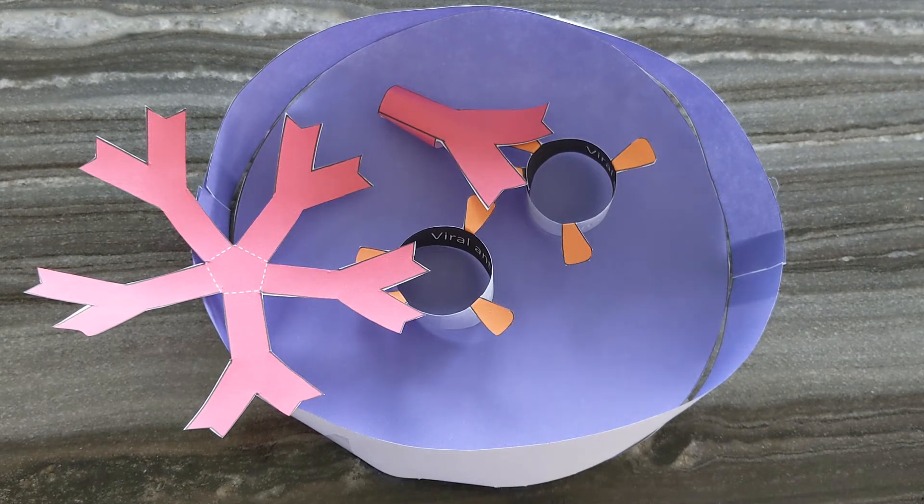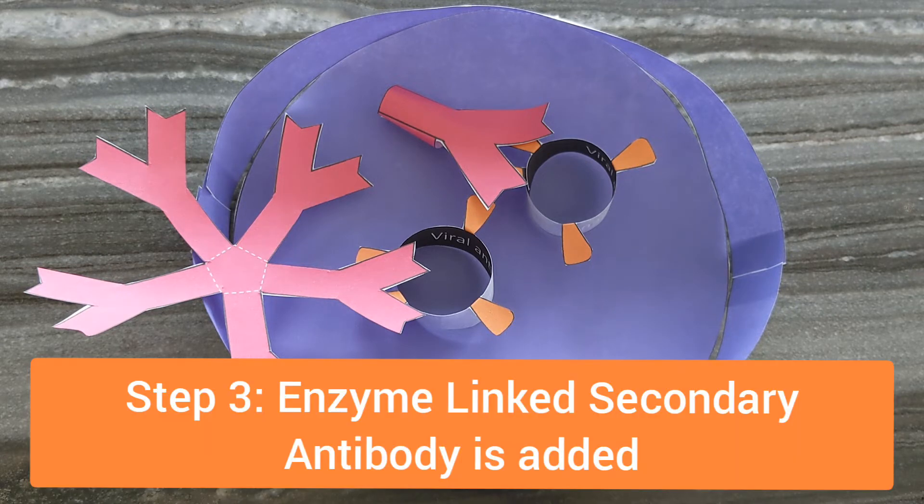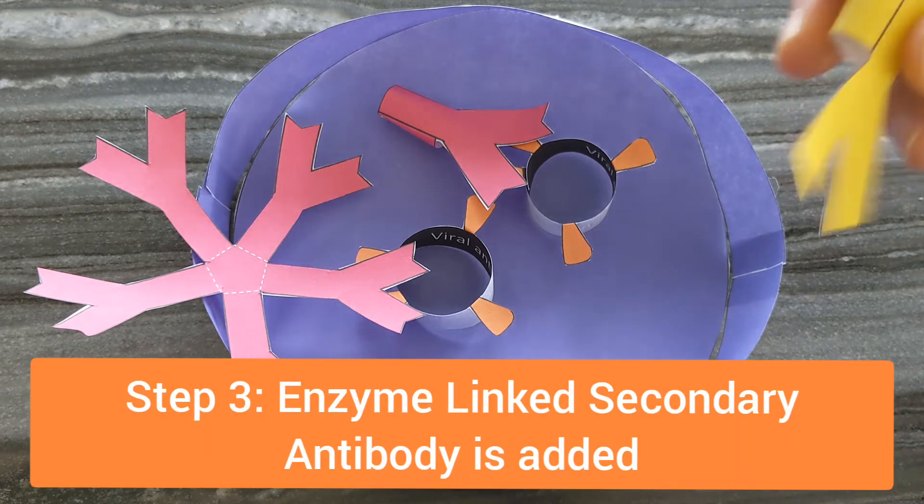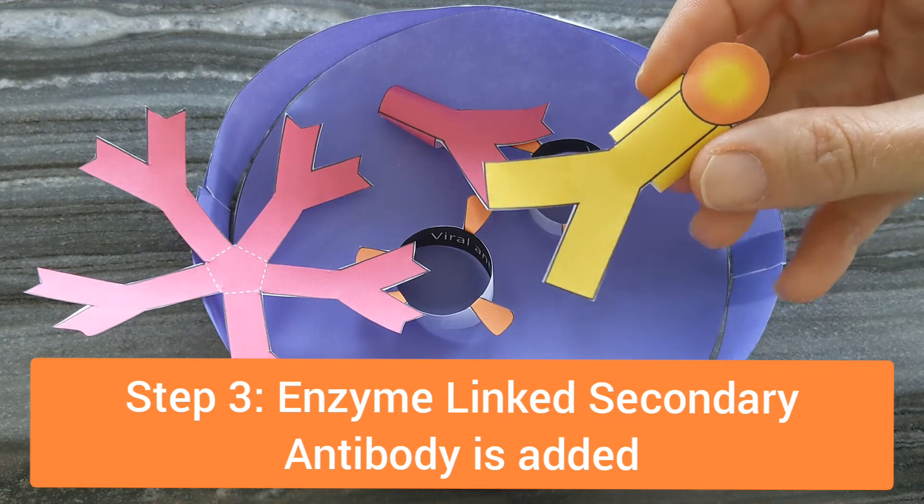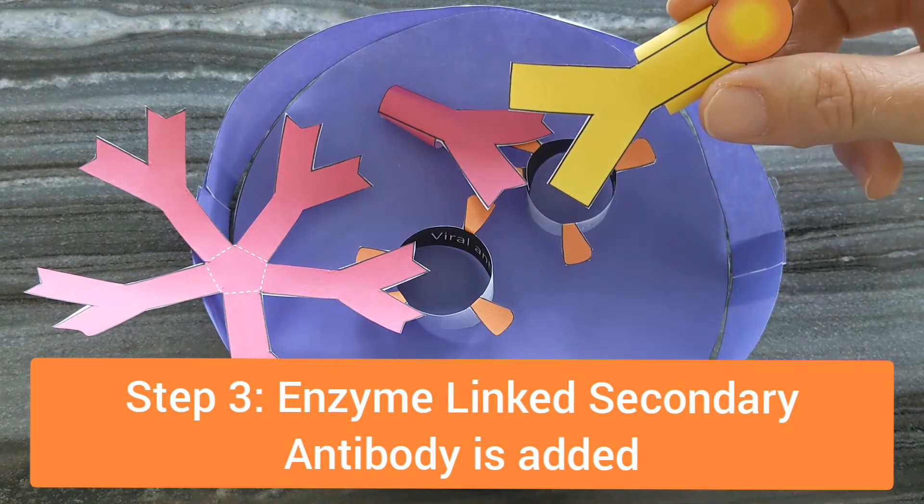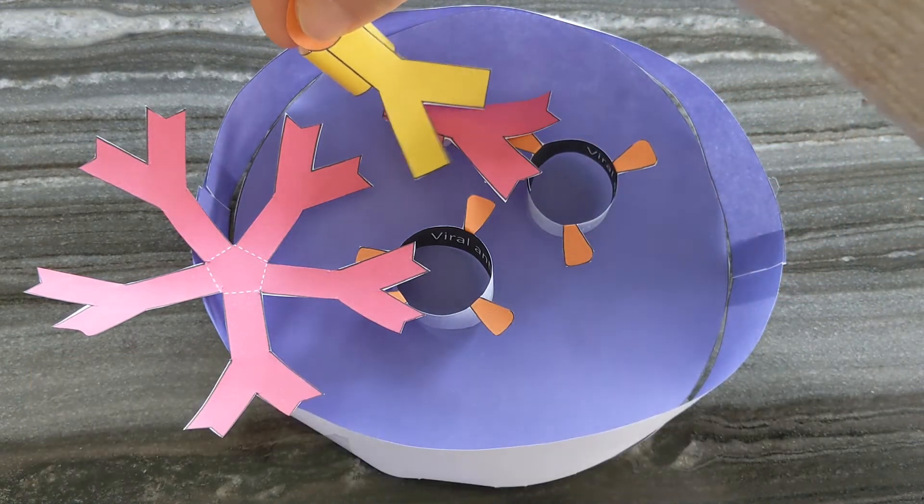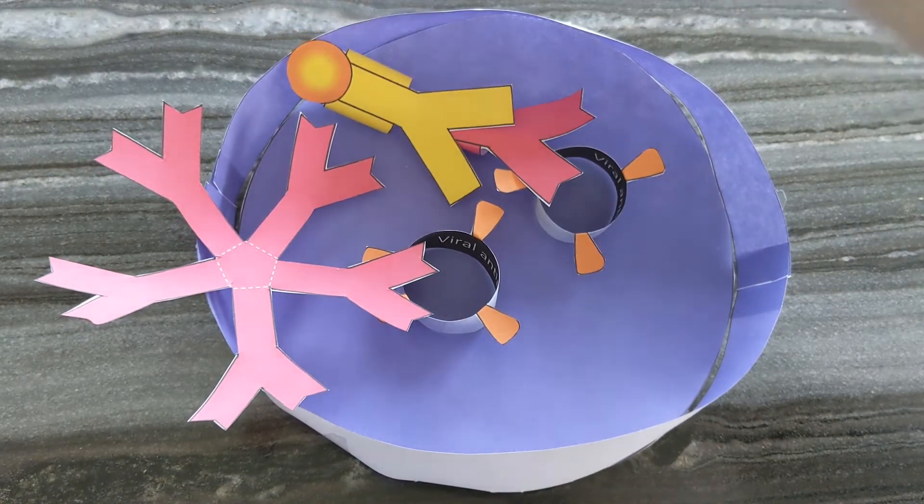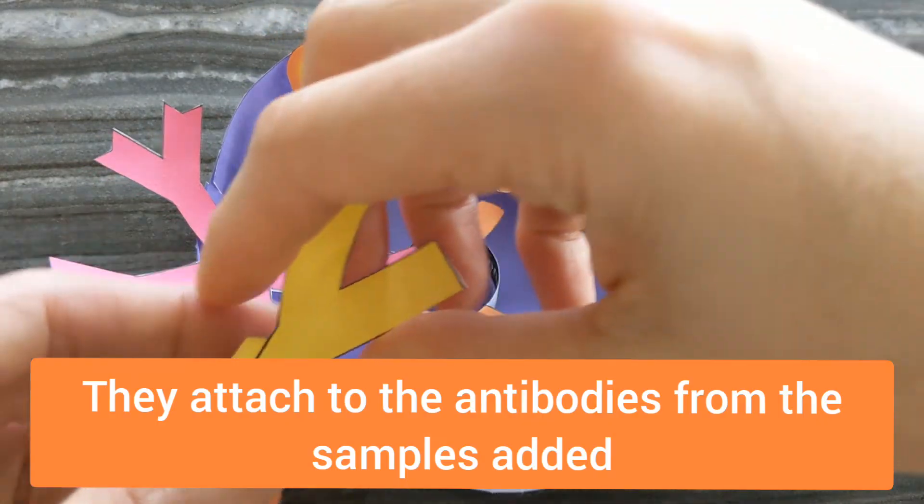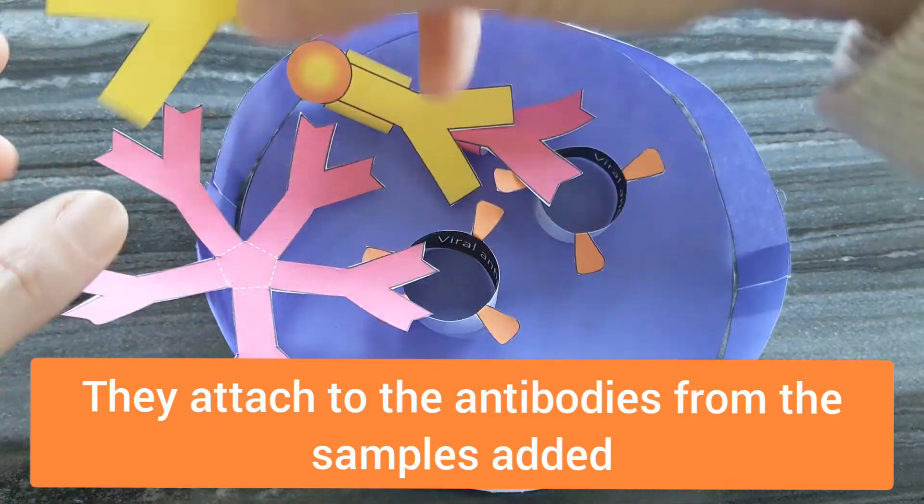The next step is to add enzyme-linked secondary antibodies. These represent our enzyme-linked secondary antibodies. They will stick to the IgG antibody, and they'll also stick to any IgM antibody that's present.